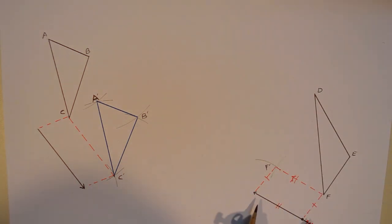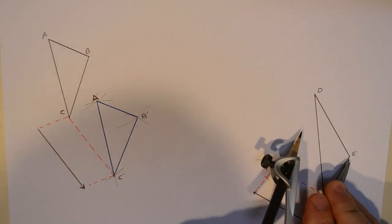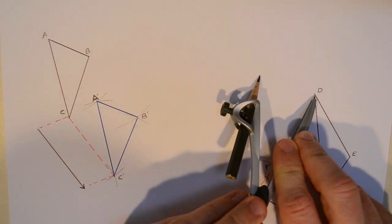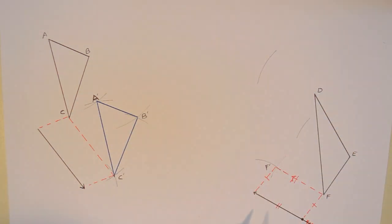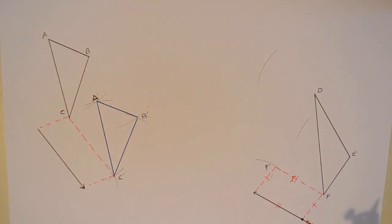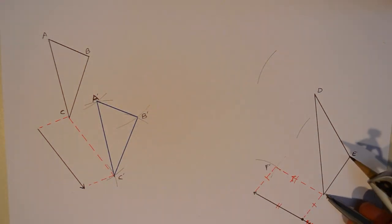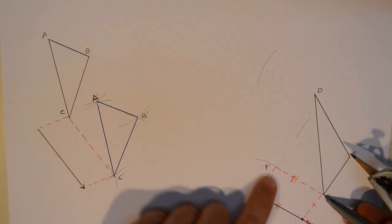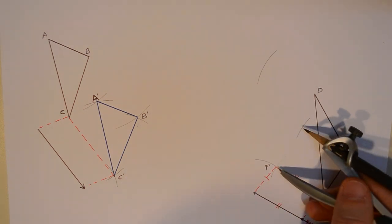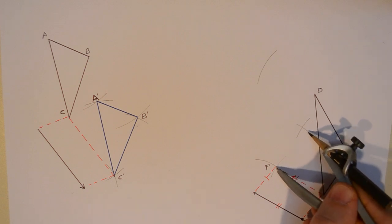Now I'm going to do the same thing. I still have my compass open to the length of the vector, which has to translate E the same distance, and has to translate D the same distance. So I know E needs to be somewhere on there, or E prime, and D prime somewhere on there. I'm just going to use known distances to find where. I know where F prime is, so if I measure from F to E in the original triangle, that has to be the same as F prime to E prime. So I'm going to take that distance, bring it over to F prime, X marks the spot.